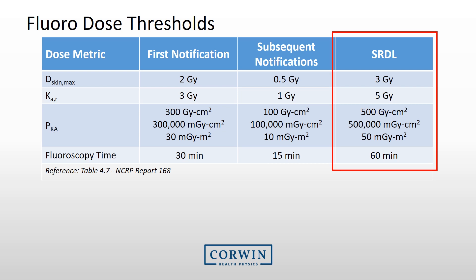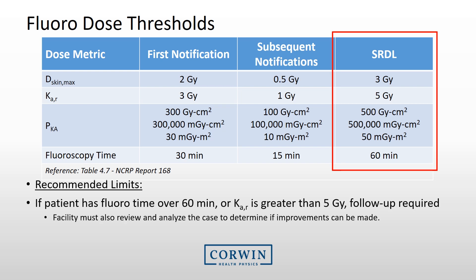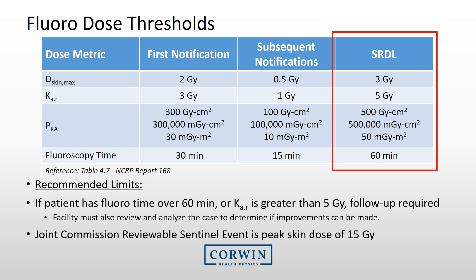It is recommended that the threshold for review and analyzing the event be set at a reported air kerma of 5 gray or a fluoro time of 60 minutes. The facility should follow up with the patient to assess for skin damage if the 5 gray limit is exceeded, and review and analyze that case to determine if improvements can be made. Also note that the Joint Commission considers it a reviewable sentinel event if there is a peak skin dose of 15 gray.